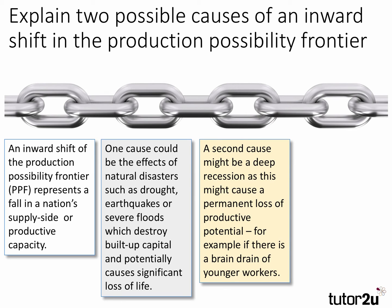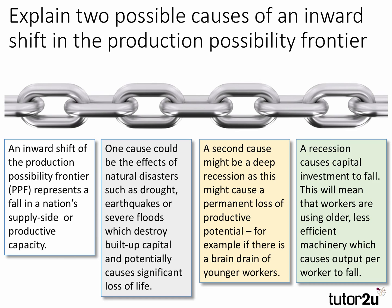A second cause might be a deep recession, as this might cause a permanent loss of productive potential. For example, if there was a brain drain of younger workers. A recession causes capital investment to fall, which means that workers are using older, less efficient machinery, causing output per worker to fall.